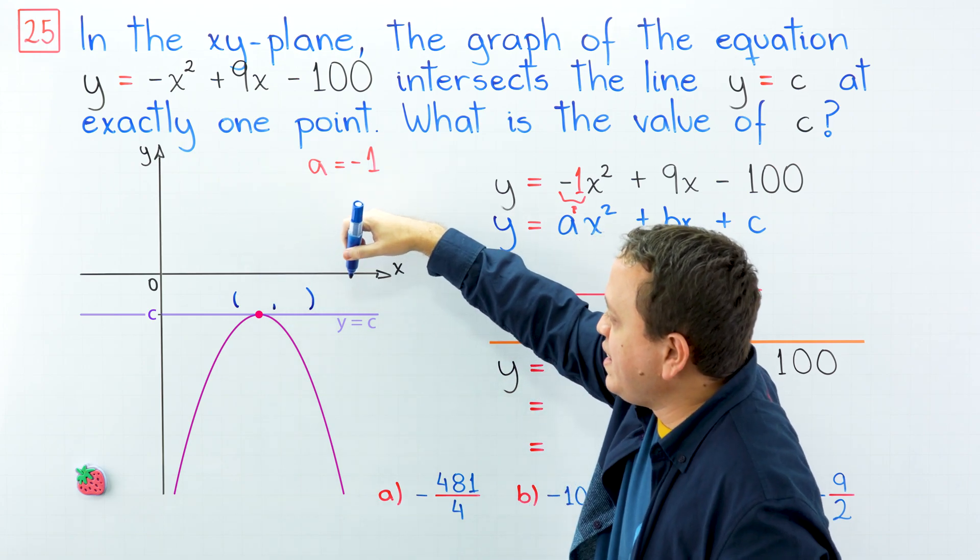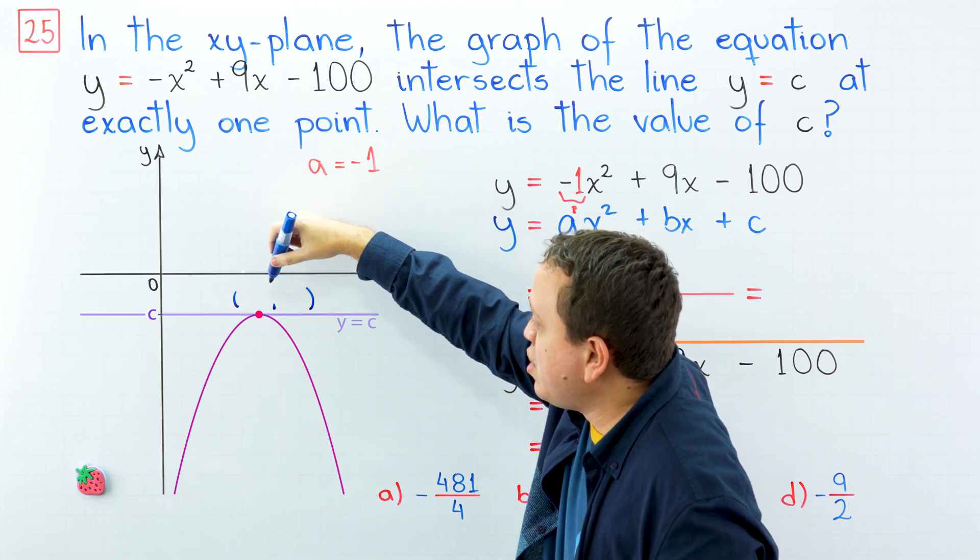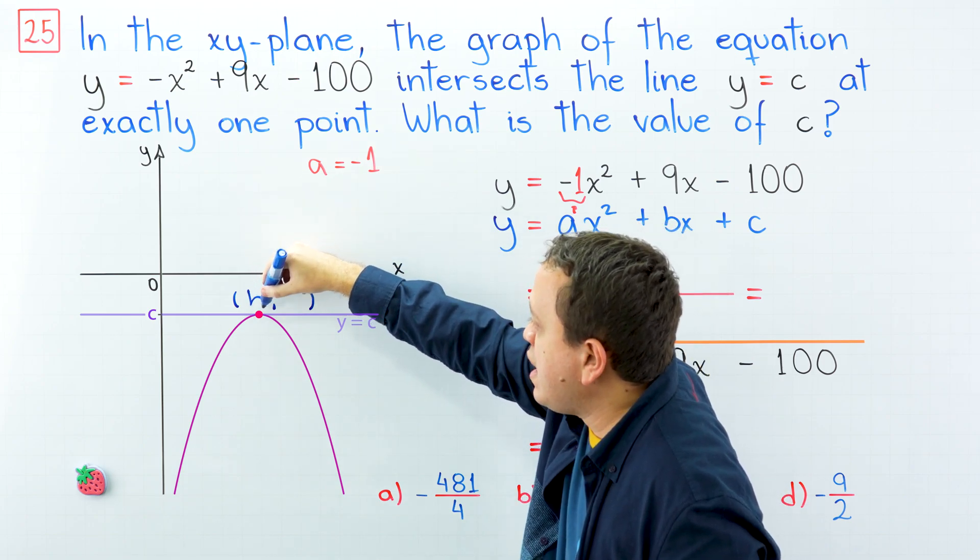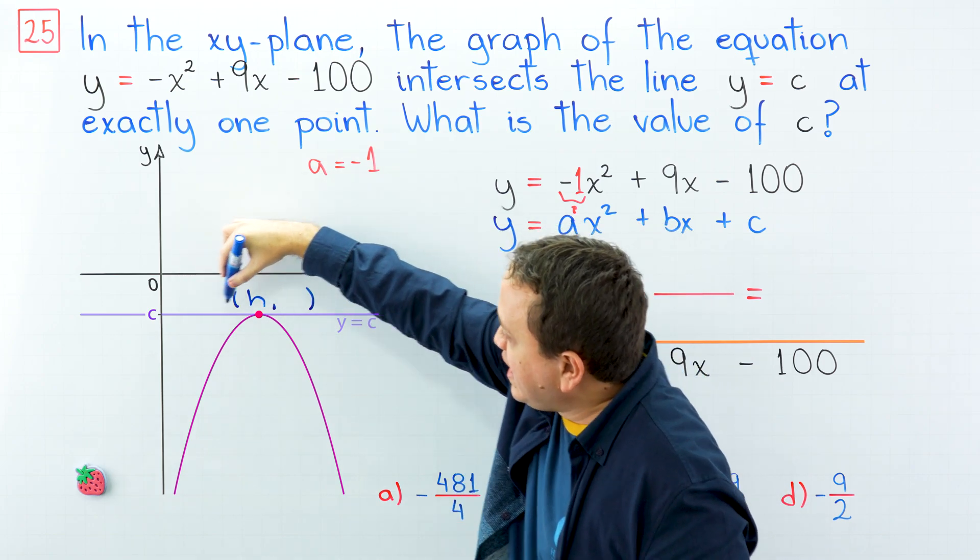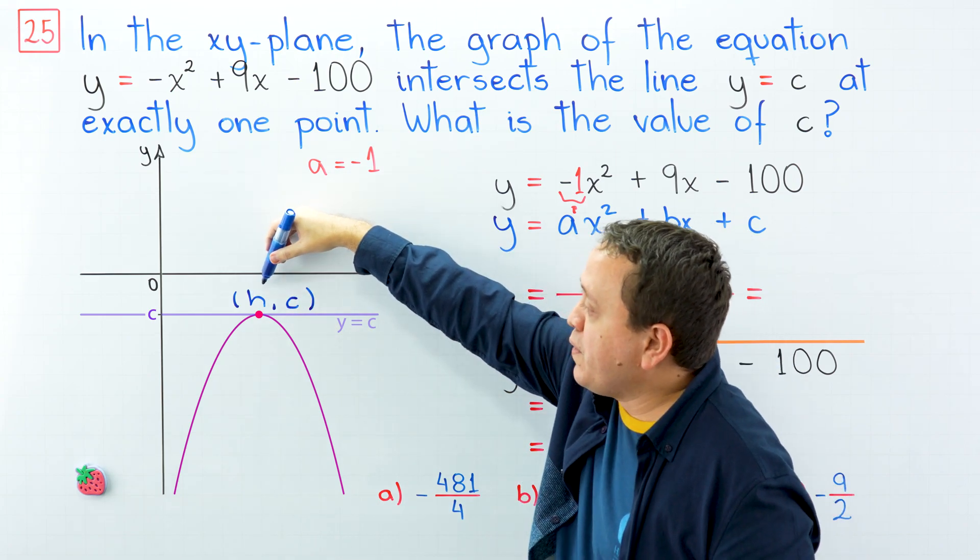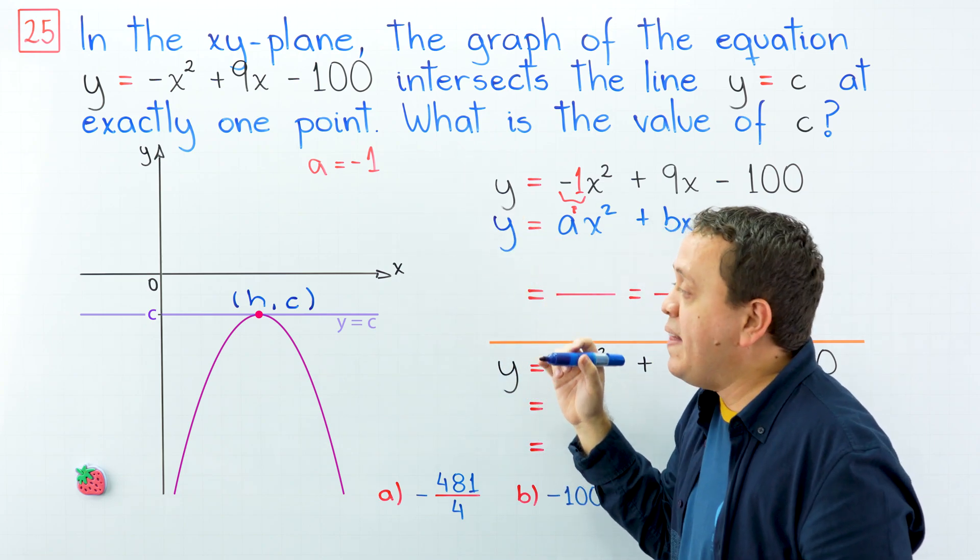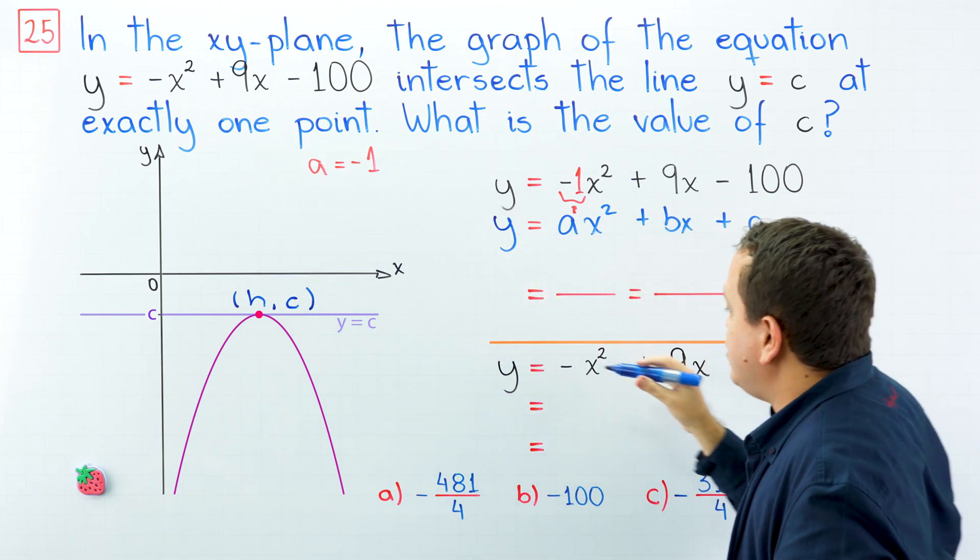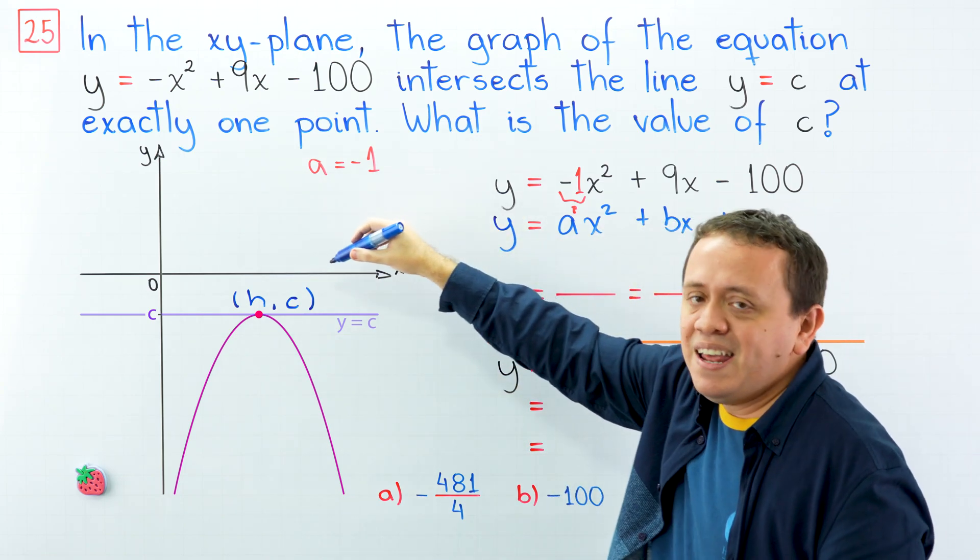What are the coordinates of the vertex? Usually, for the x coordinate, we use h, and then the y coordinate is c. And now we're going to find the value of h with the formula, and then we will plug these two values into our equation to get the value of c.